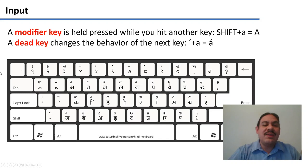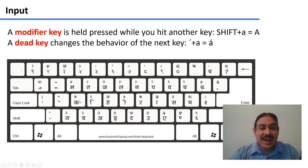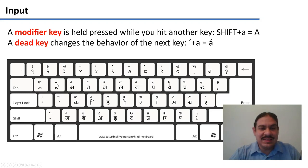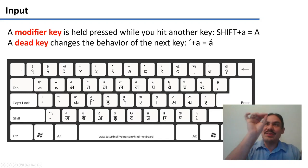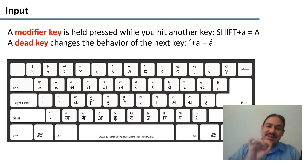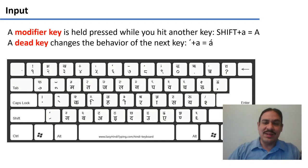You would have a main key for your consonant — in this case the Devanagari K — and then dead keys that you press to get the different vowels that go above or below the letter.